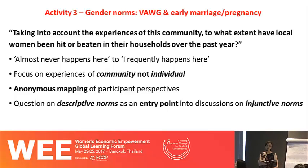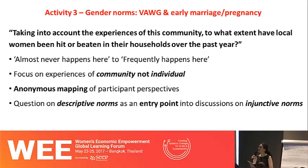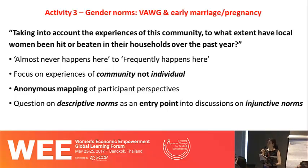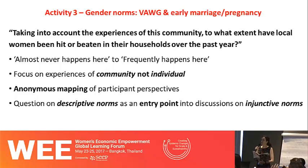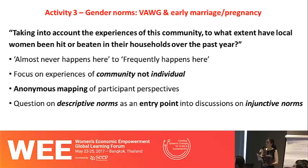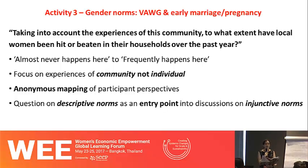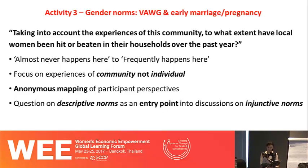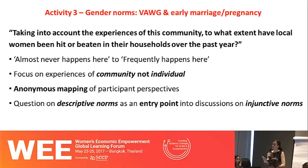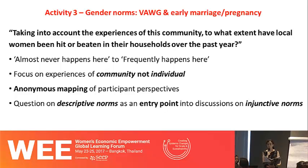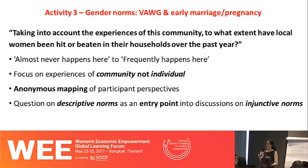The third and final activity looked at gender norms around violence against women and girls, and early marriage and pregnancy. We started with a statement presented to participants — for example: 'Taking into account the experiences of this community, to what extent have local women been hit or beaten in their households over the past year?' Participants were asked to anonymously rate the extent to which they agreed, from 'almost never happens here' to 'frequently happens here.' The responses were presented back to participants anonymously, as a way of focusing on community experiences rather than individual beliefs, distinguishing between norms and personal beliefs, and reducing social desirability bias.